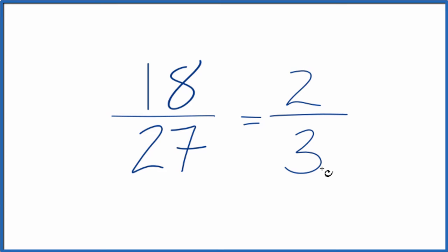And these are equivalent. They have the same value, it's just that we've simplified 18 over 27 down to 2 over 3.